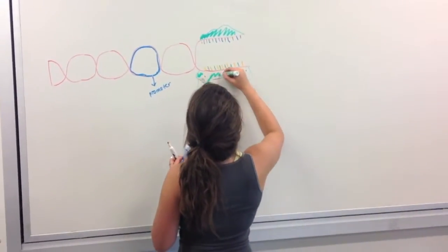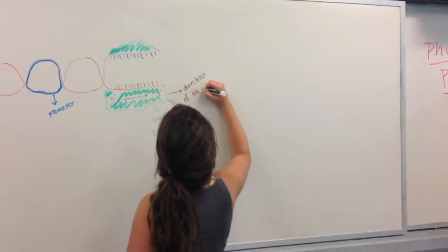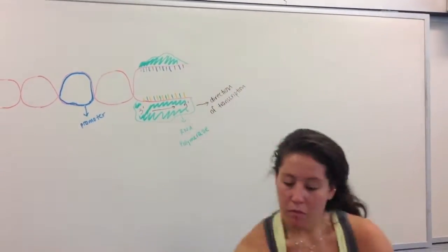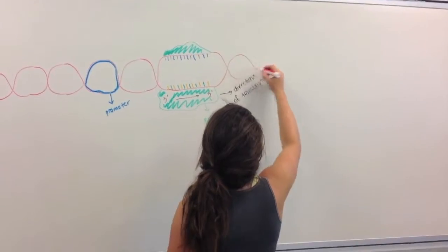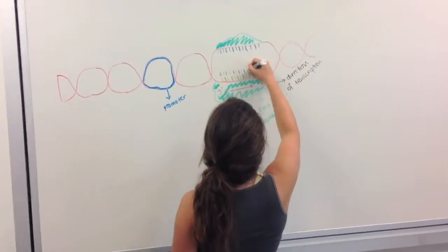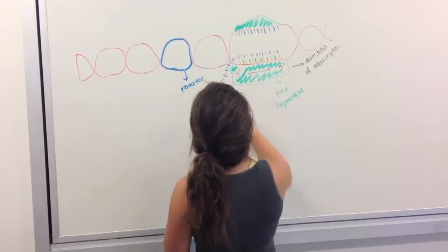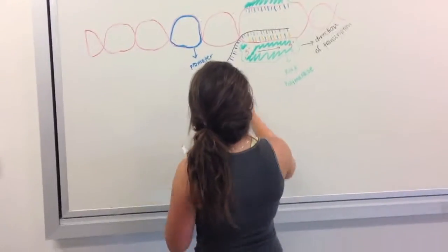RNA polymerase uses ribonucleoside triphosphates such as ATP, UTP, GTP, and CTP as substrates and catalyzes formation of a phosphodiester bond between them. While RNA grows as a single stranded molecule, the two DNA strands rewind. The RNA transcript is anti-parallel to the DNA template strand.